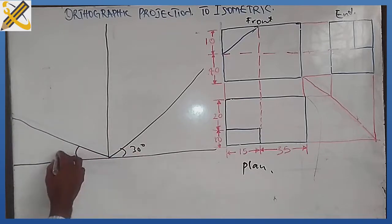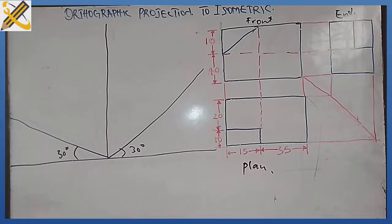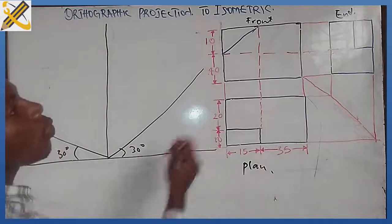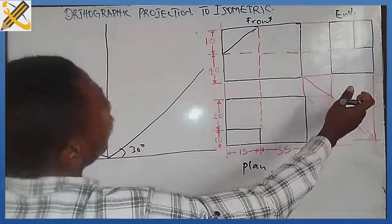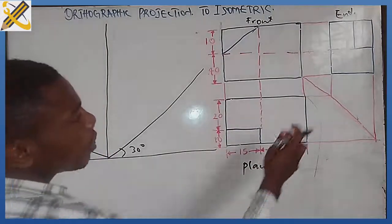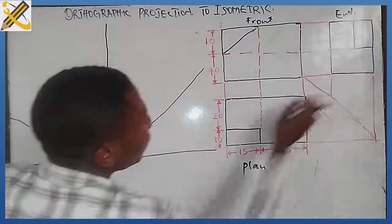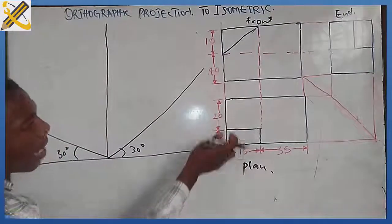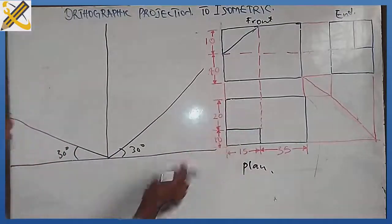So if that has been done, as you already know in first angle projection, if our end view is towards the right hand side, it will be towards the left hand side on the object itself. So let me project my end view here. The dimension from this place to this place for my end view is 30.